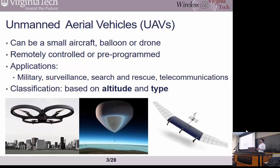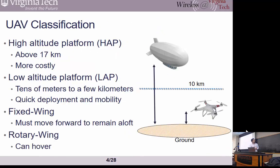UAVs can be classified based on their altitude or their type. Based on altitude we can have high altitude platform (HAP) and low altitude platform (LAP). HAP is usually deployed above 17 kilometers — more costly but can fly for longer time. Low altitude platforms operate from a few hundred meters to a few kilometers, and the good thing about them is that they can be quickly deployed, making them more appropriate for temporary event scenarios.